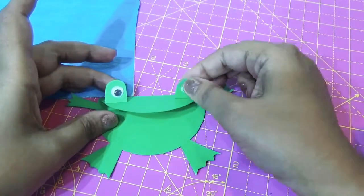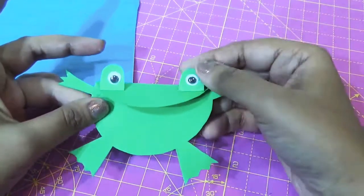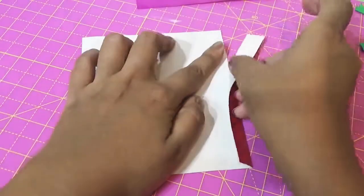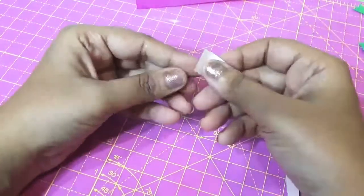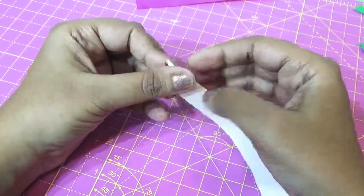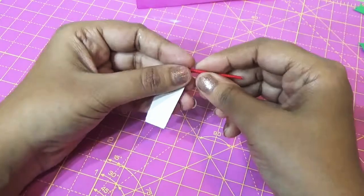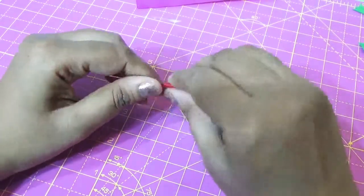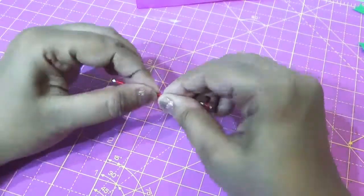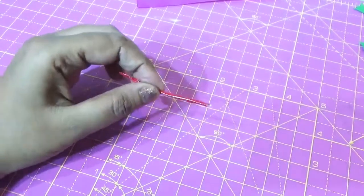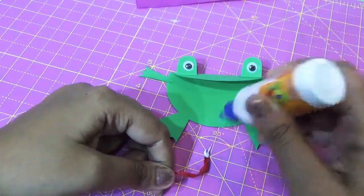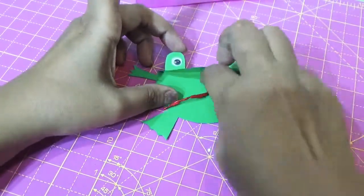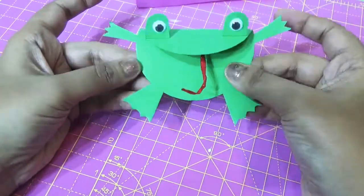It looks very cute and easy to make. Now I will make the tongue. I have taken a red sheet. I will twist it like this and stick it with glue, then twist it randomly again. I will put it inside this way. See, it will look like this.